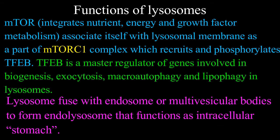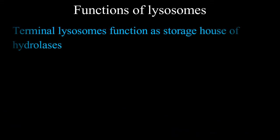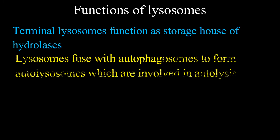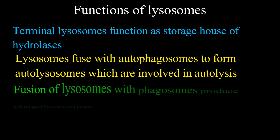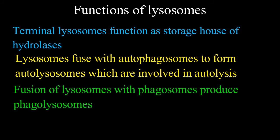Lysosomes fuse with endosomes or multivesicular bodies to form endolysosomes that function as the intracellular stomach. Terminal lysosomes function as storage houses of hydrolases. Lysosomes fuse with autophagosomes to form autolysosomes, which are involved in autolysis. Fusion of lysosomes with phagosomes produces phagolysosomes. Lysosomes may also act as suicide bags when they are ruptured.